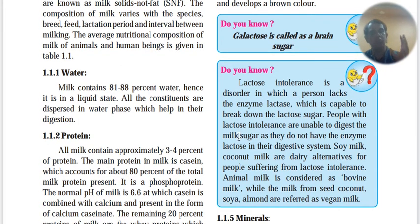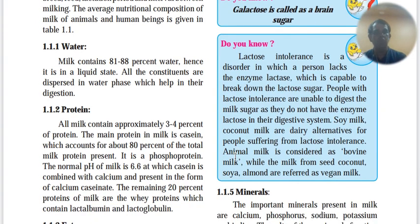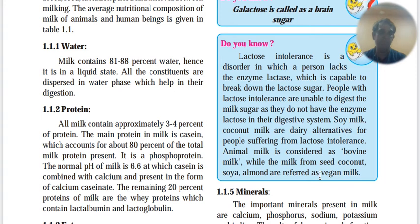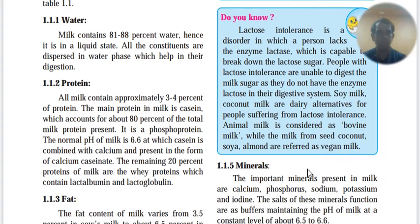Lactose-intolerant people can have soy milk, coconut milk, and other alternatives. Animal milk is bovine — bovine means cow and buffalo. Milk from seeds like coconut, soya, and almonds are open to vegans, because they come from a vegetable source.